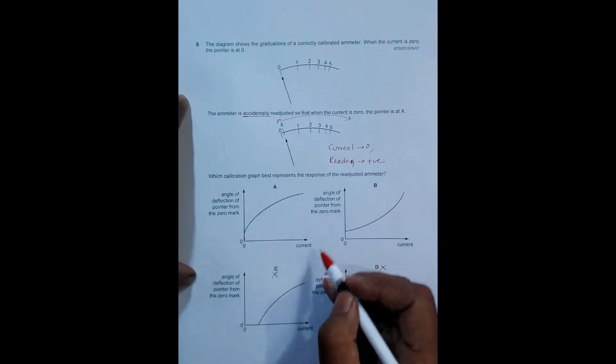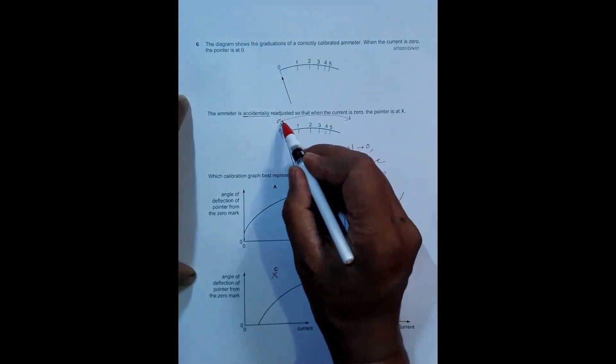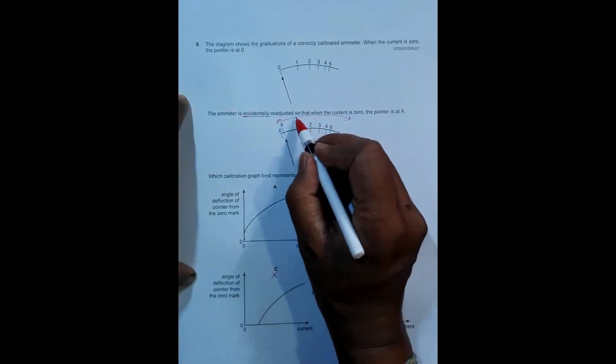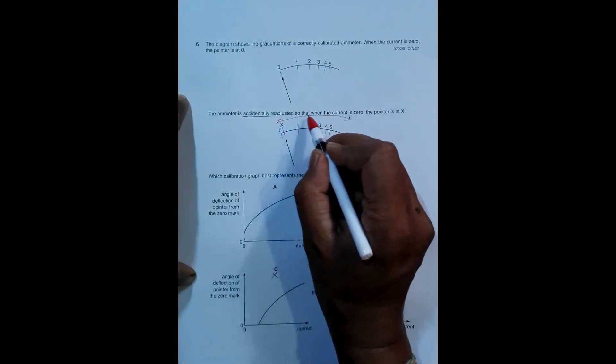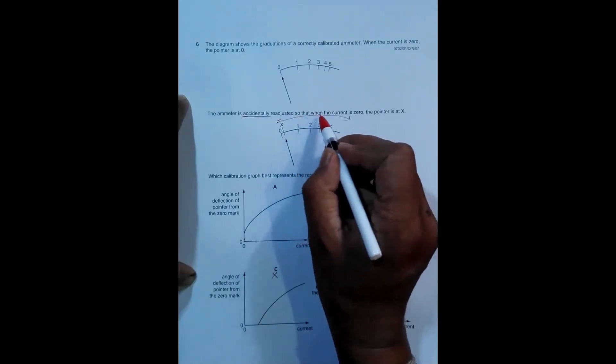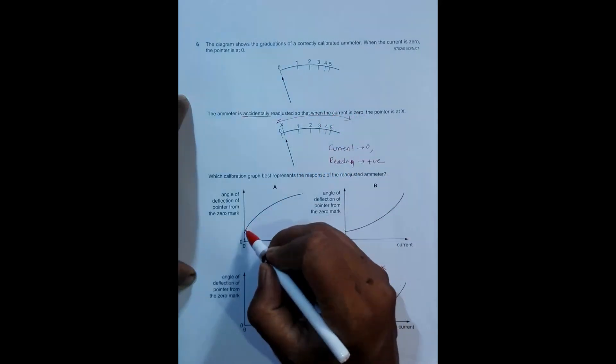The angle is positive, so these two qualify. Then when current becomes one ampere, the angle variation is somewhat like this. When current is by one ampere some variation like this, but when it is by next one ampere the variation is less.